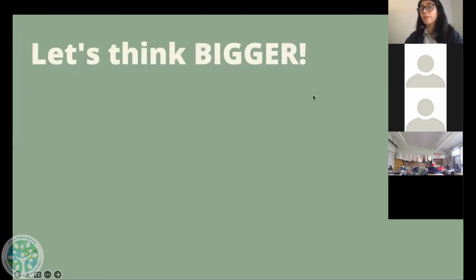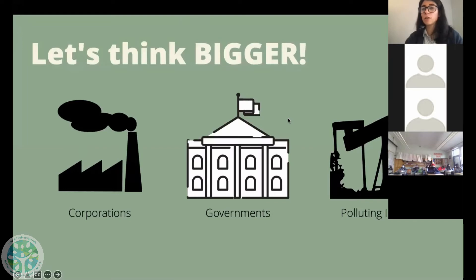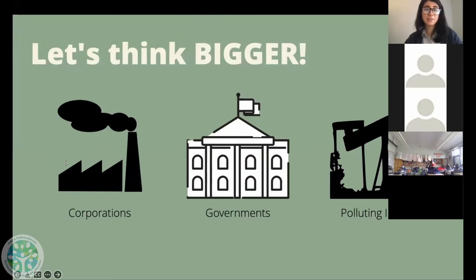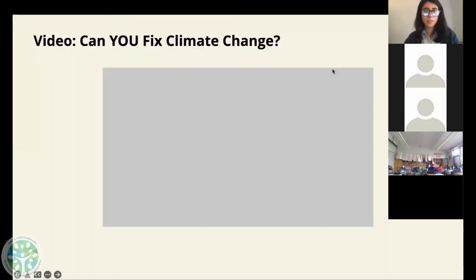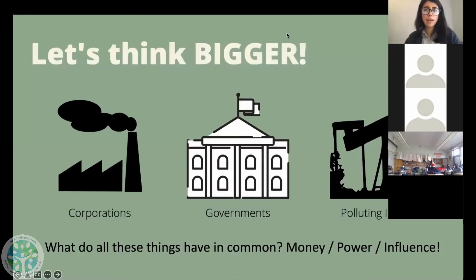For example, we've got corporations, governments, and polluting industries like oil and gas. What do all of these things have in common? Capitalism — that's a great one, thank you to the student school for putting that in the chat. All of these entities — what do they have in common? They have a lot of money, they have a lot of power, and they have a lot of influence.